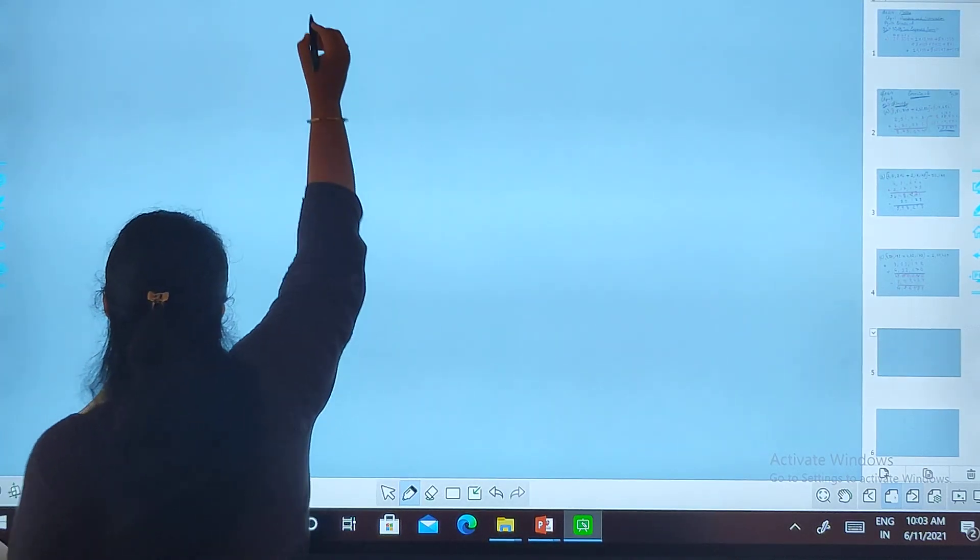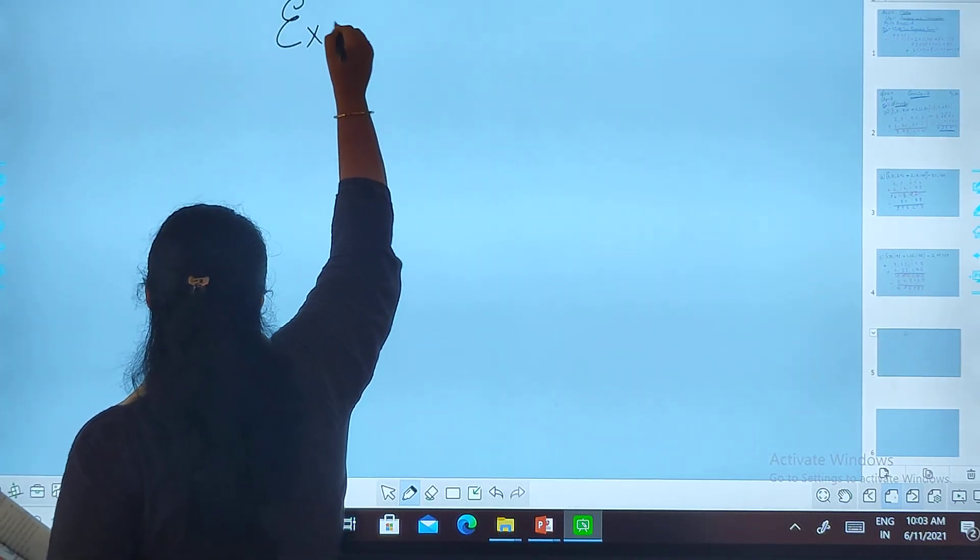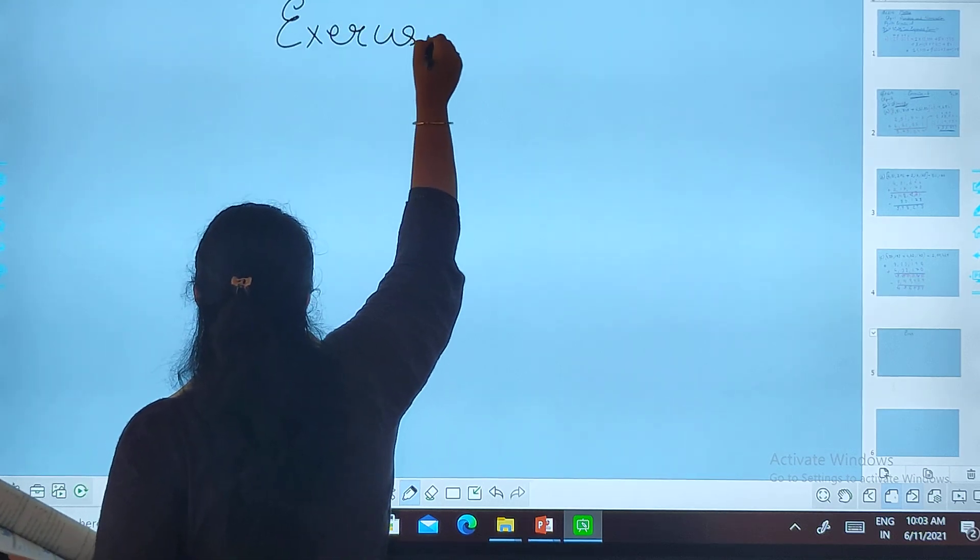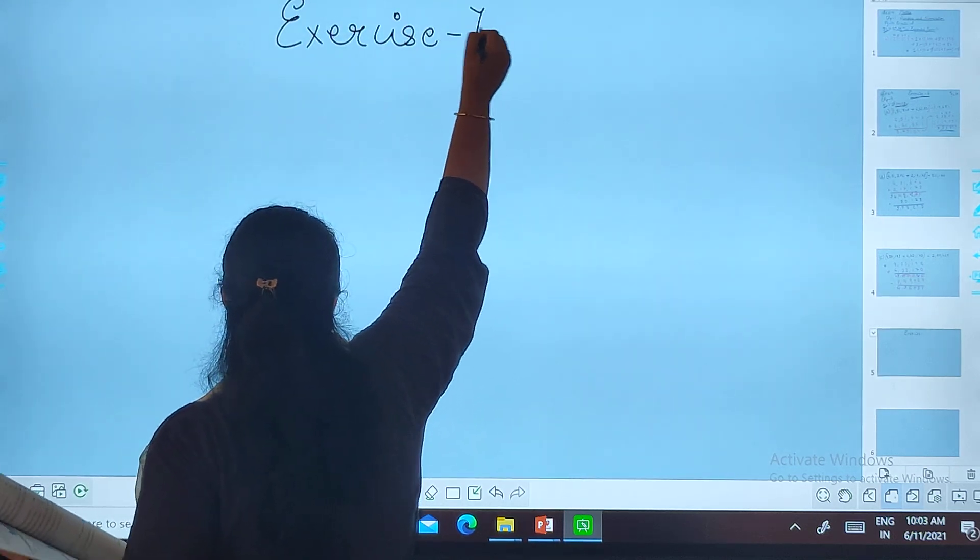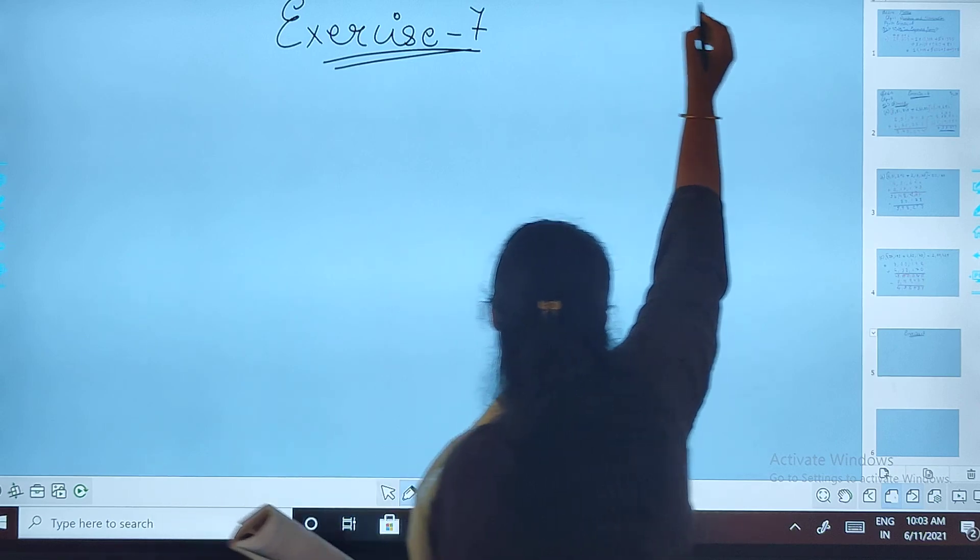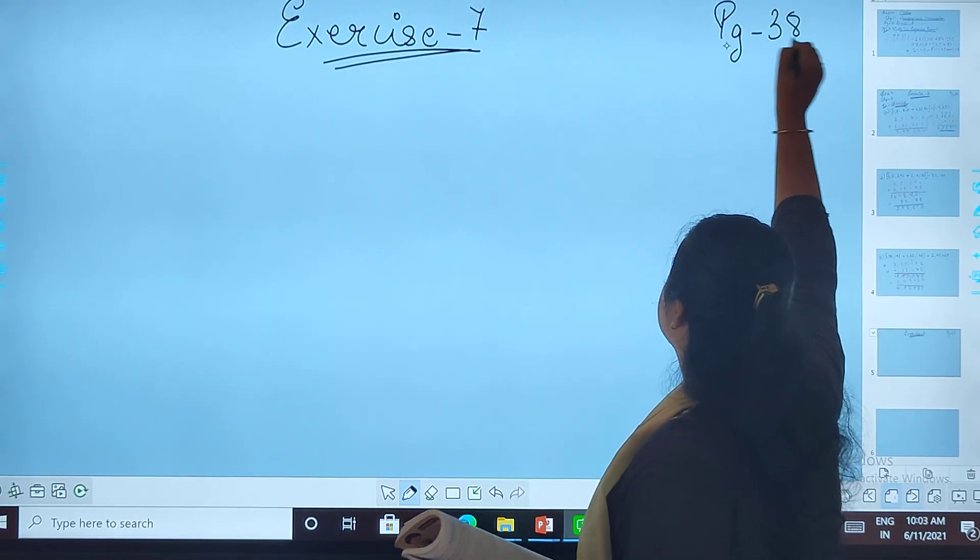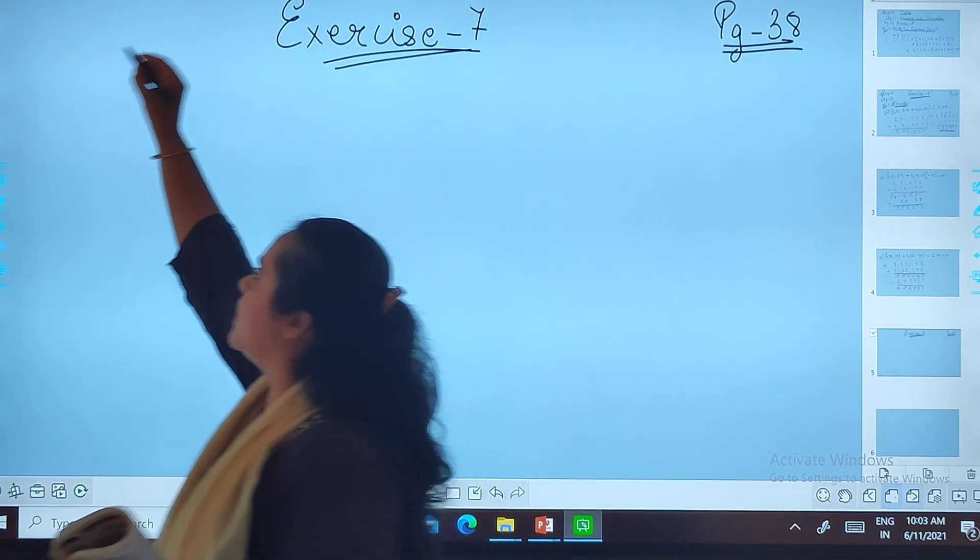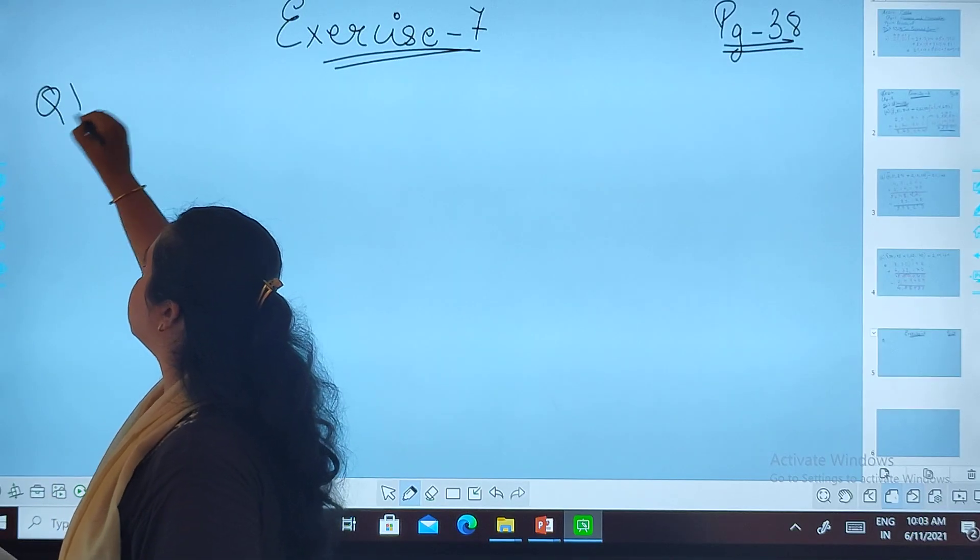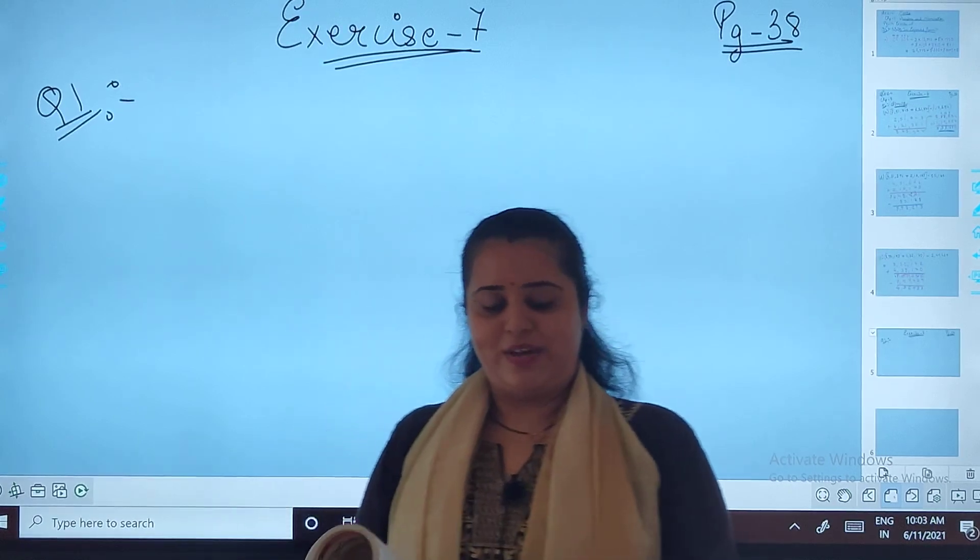Exercise number seven on page number 38. So first of all, always start with the heading properly. Exercise number seven on page number 38. We will be reading the question number one and then we will be solving it. Okay?